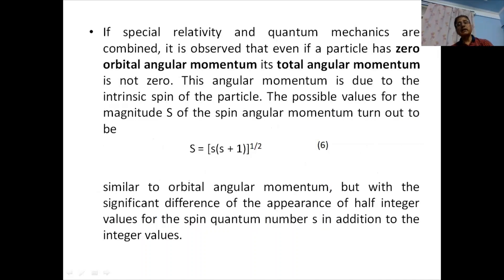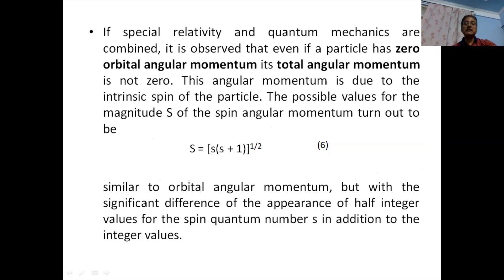If special relativity and quantum mechanics are combined, it is observed that even if a particle has zero orbital angular momentum, its total angular momentum is not zero. This angular momentum is due to the intrinsic spin of the particle. The possible values for the magnitude S of the spin angular momentum are S = √(s(s+1)) ℏ, but with the significant difference that half-integer values appear for the spin quantum number s.